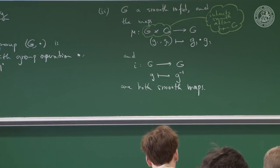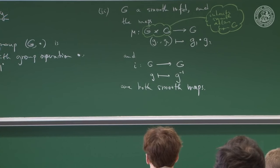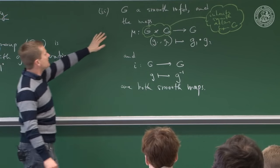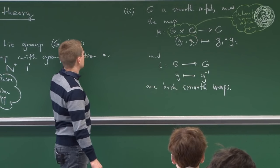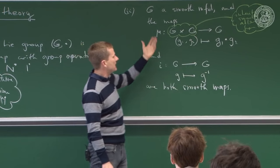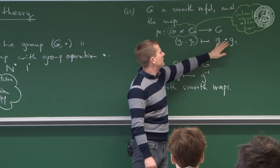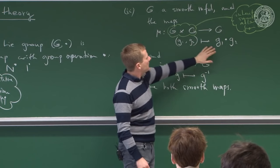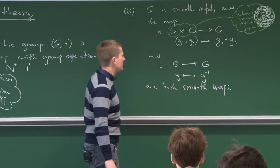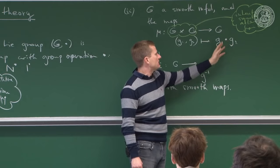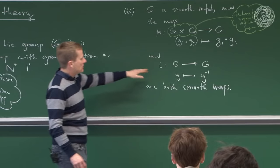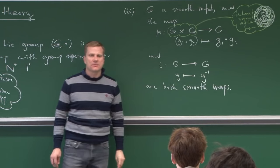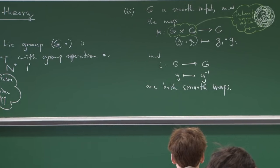This is to be expected: if you have a group and extra structure on the underlying set, you want a compatibility condition with that extra structure. In this case, multiplication — a generic name for the blob operation — and the inverse operation should both be smooth. Any such structure with these combined properties is called a Lie group.